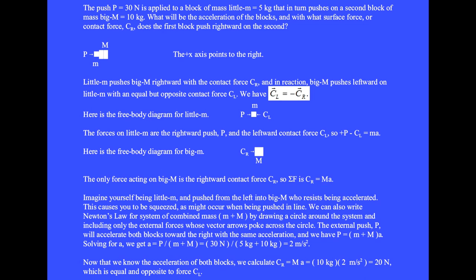Imagine yourself being little m pushed to the left into big M who resists being accelerated, causing you to be squeezed, as might occur when being pushed in line. We can also write Newton's law for the system of combined mass little m plus big M, including only external forces whose vector arrows poke across the circle. The external push PE accelerates both blocks rightward with the same acceleration. Solving for A: A equals push divided by (little m plus big M) equals 30 newtons divided by 15 kilograms equals 2 meters per second squared.